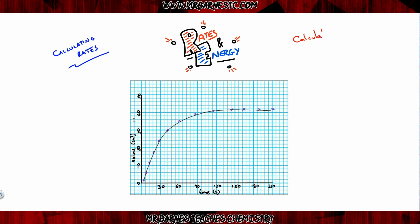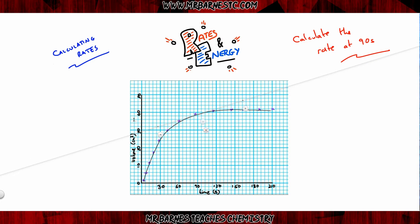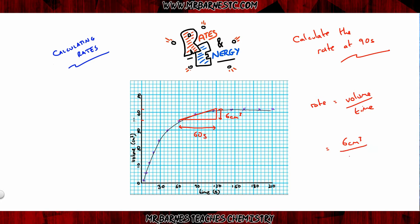You can also calculate the rate from these graphs. For example, to calculate the rate at 90 seconds, draw a tangent by placing a ruler as flat against the curve at 90 seconds as possible. Then draw a large triangle — the larger the better for accuracy. Work out the height and base: here the height is 6 cm³ and the base is 60 seconds. Rate equals volume divided by time, so 6 ÷ 60 = 0.1 cm³ per second. That is the rate at 90 seconds.